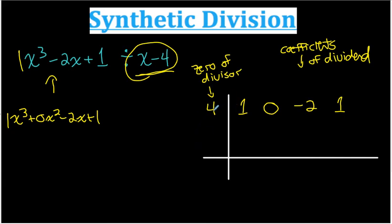So that's how I set it up. 0 of divisor here, coefficients of dividend here. And then what I'm going to do is I'm going to write an addition sign here so that I remember what operation I'm going to do, and I'm going to write a multiplication sign here to also remind me of the operation I'm going to do.